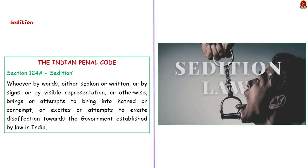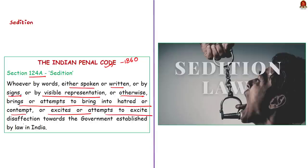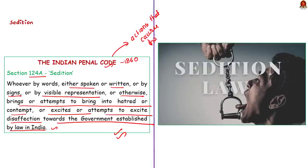First of all, what is sedition? Sedition is defined under Section 124A of the Indian Penal Code 1860. Section 124A defines sedition as an offense committed when a person by words either spoken or written, or by sign, or by visual representation, brings or attempts to bring into hatred or contempt, or excites or attempts to excite dissatisfaction towards the government established by law in India. To put it simply, sedition can be any action — speech, writing, or behavior — that brings about hatred or dissatisfaction towards the lawfully established government in India.